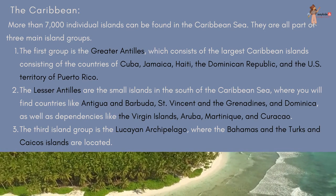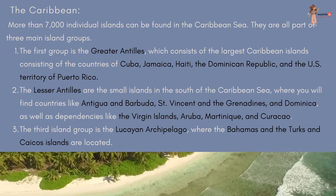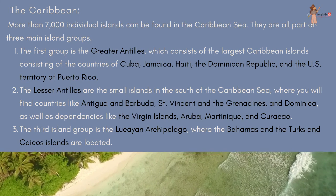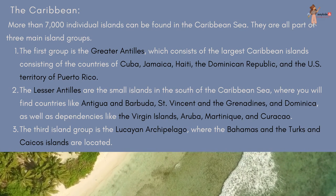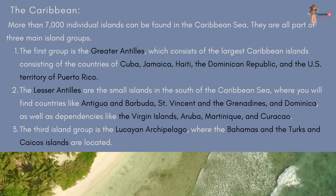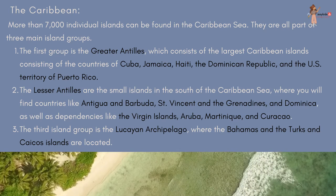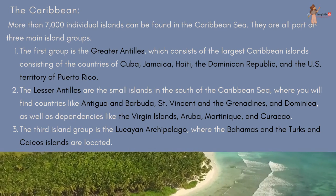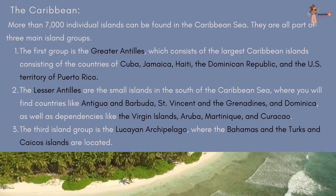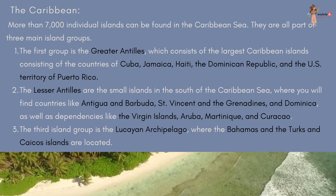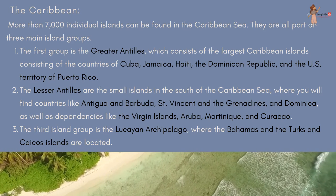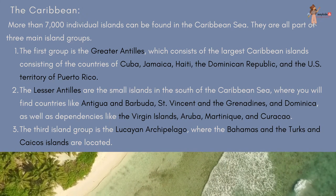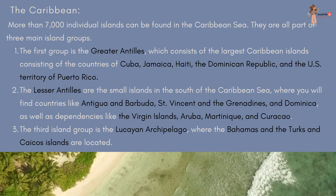More than 7,000 individual islands can be found in the Caribbean Sea. They are all part of three main island groups. The first is the Greater Antilles, which consists of the largest Caribbean islands — Cuba, Jamaica, Haiti, the Dominican Republic, and the US territory of Puerto Rico. The Lesser Antilles are the small islands in the south of the Caribbean Sea, including Antigua and Barbuda, St. Vincent and the Grenadines, and Dominica, as well as dependencies like the Virgin Islands, Aruba, Martinique, and Curacao. The third island group is the Lucayan Archipelago, where the Bahamas and the Turks and Caicos Islands are located.